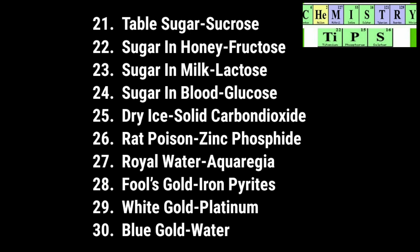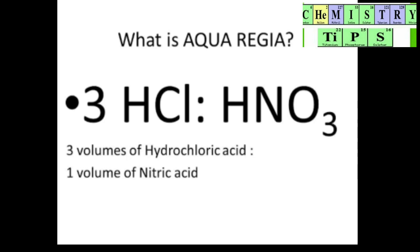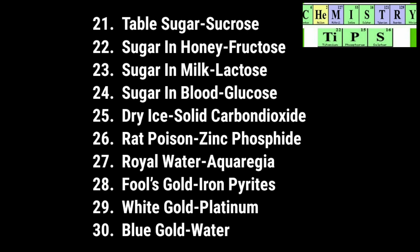Red poison — zinc phosphide is known as red poison. What is royal water? Aqua regia — it is a mixture of hydrochloric acid and concentrated nitric acid: 3 ml concentrated hydrochloric acid mixed with 1 ml concentrated nitric acid. Then we get aqua regia.